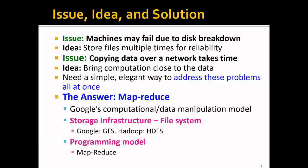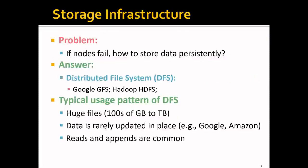MapReduce is Google's computational and data manipulation model, and it consists of two components. The first component is storage infrastructure, or file system — in Google this is called the Google File System, or GFS, and the open source version is called the Hadoop File System, or HDFS. The second component is a programming model. For the storage infrastructure, the challenge is: if nodes fail, how do you store data persistently? The answer is a distributed file system, with examples including GFS and HDFS.